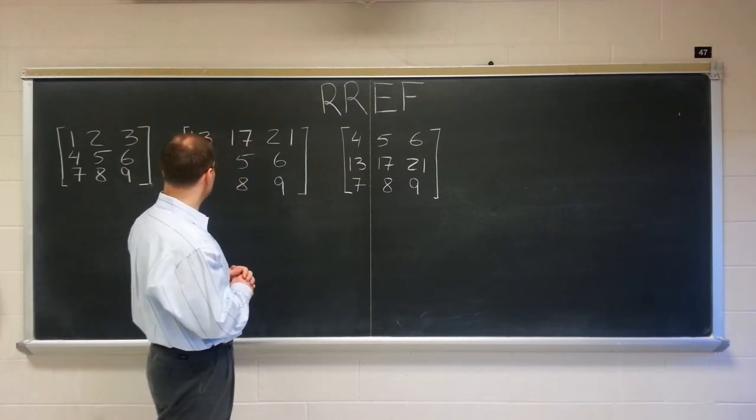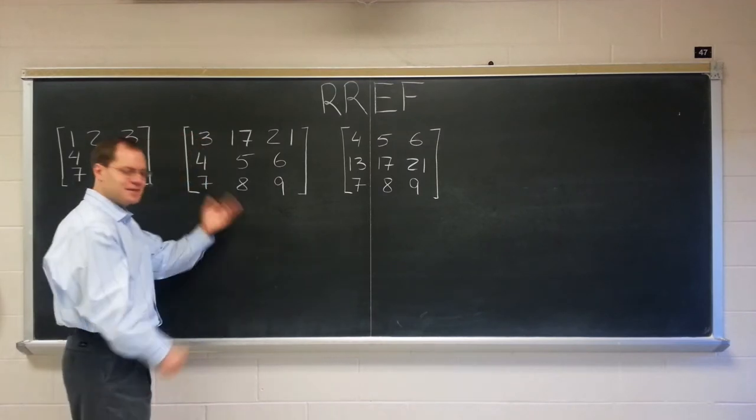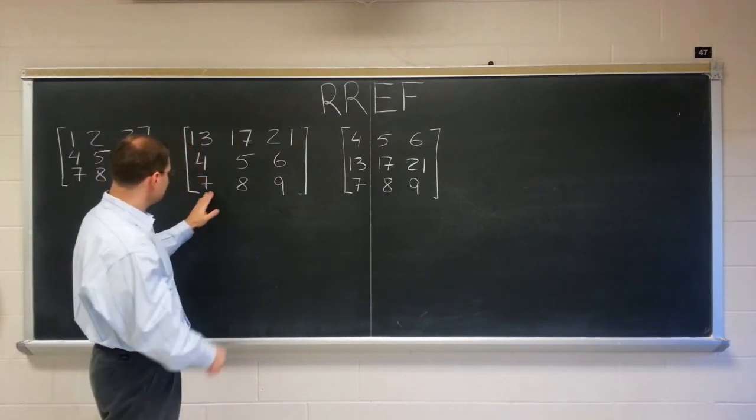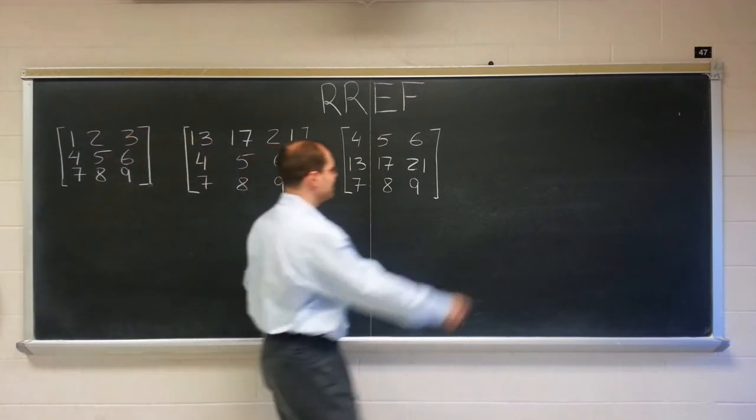What's the other one? What's the remaining one? I think it's multiplying a row by a number. Let's see, let's multiply the last row by 11.